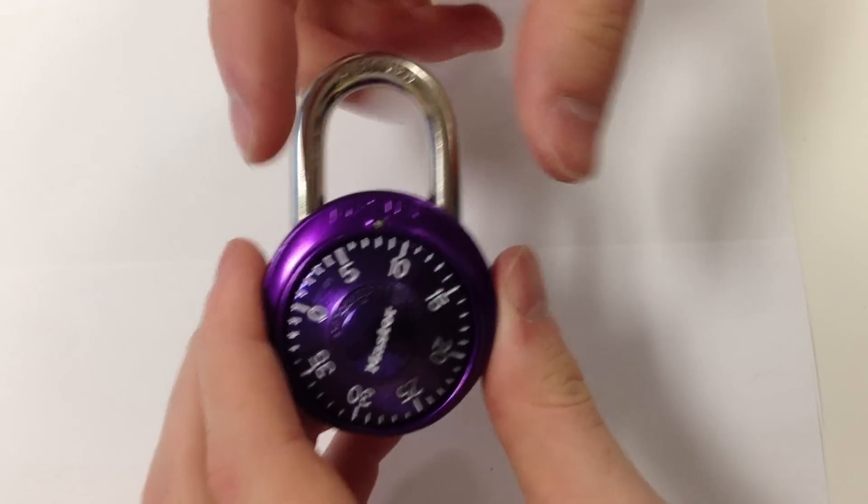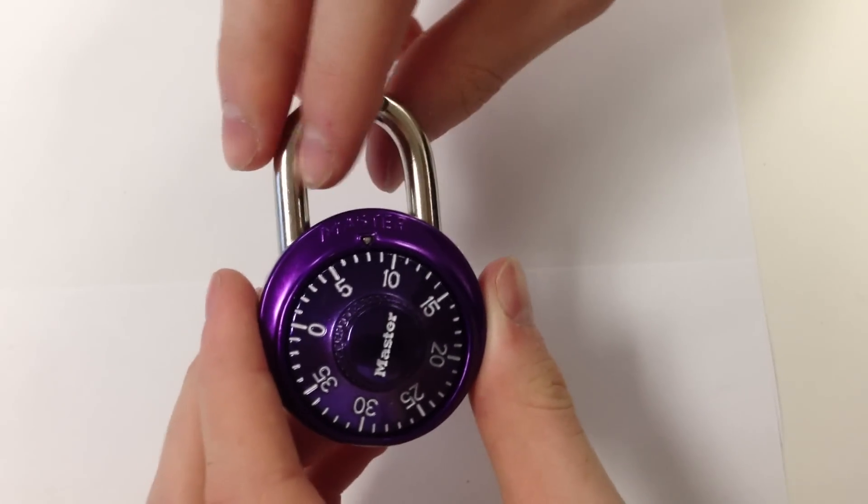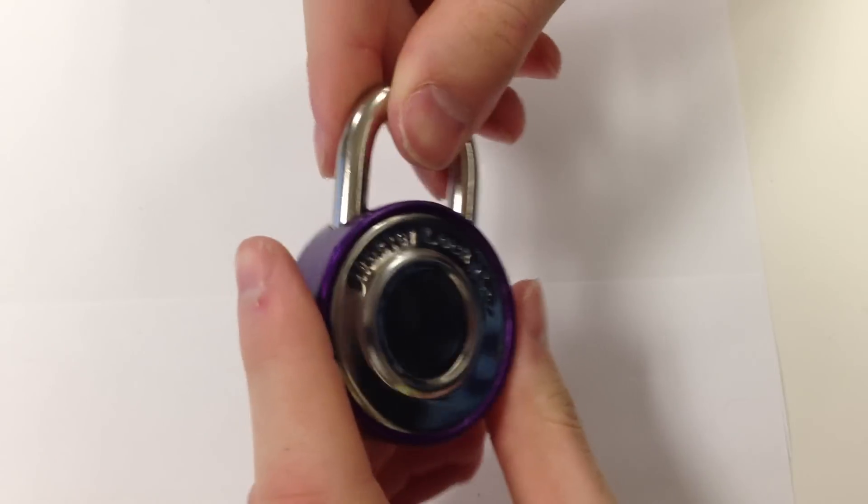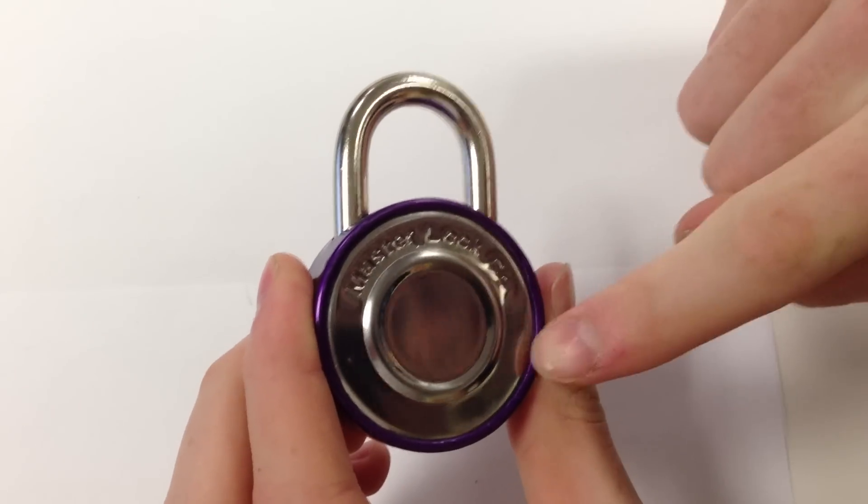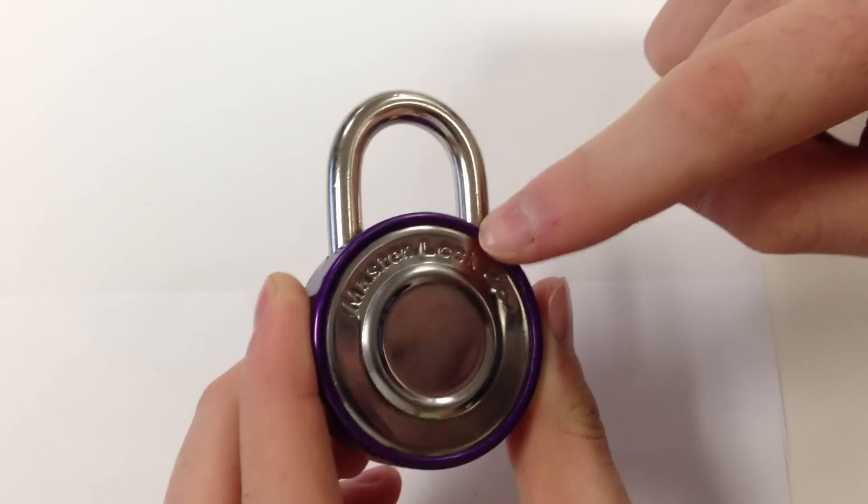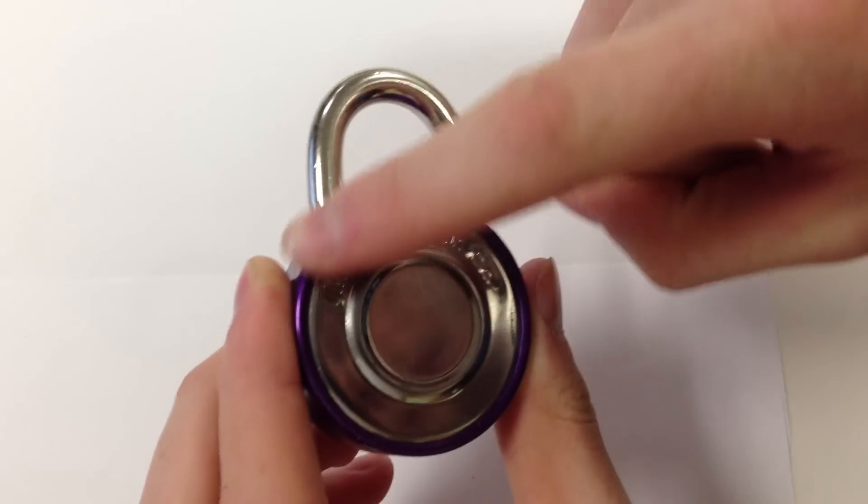So what we have here is a standard master combination padlock. In order to open this up, we had to take a buzz saw and make slices all around the back of the outer case, around where you see the purple.